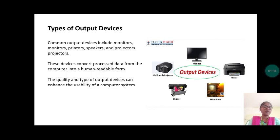Types of output devices. Common output devices include monitors, printers, speakers, and projectors. These devices convert processed data from the computer into a human-readable form. The quality and type of output devices can enhance the usability of a computer system.